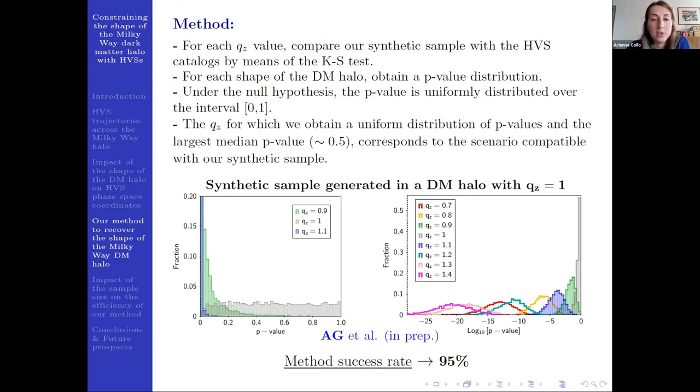And here I show an example of the reliability of our method for a synthetic sample generated in a dark matter halo with q_z equal to 1. So if we compare this synthetic sample generated in a spherical dark matter halo with our mock catalogs generated with q_z equal to 1, we can see from the left plot that we recover the uniform distribution of p-values, which is the gray histogram. While if we compare it with the mock catalogs generated for q_z equal to 0.9 or to 1.1, we can't recover the uniform distribution and the median p-value will be a lot smaller.